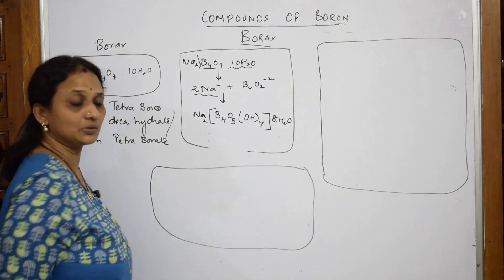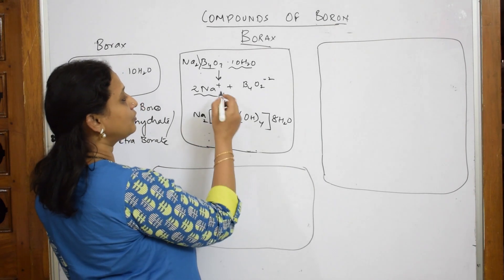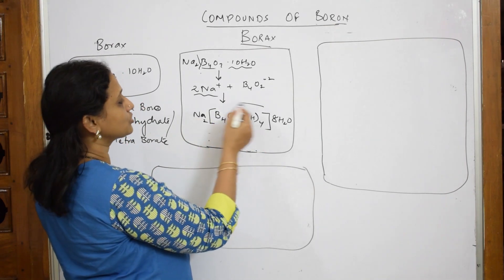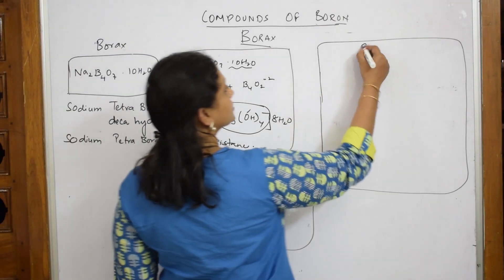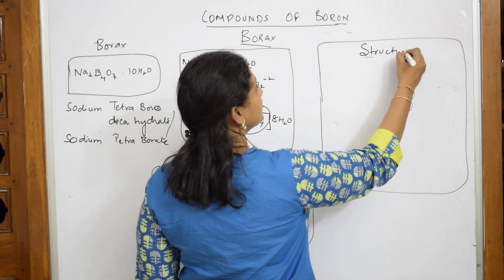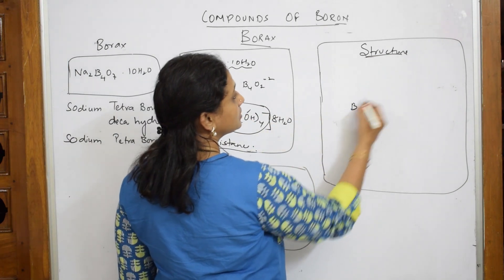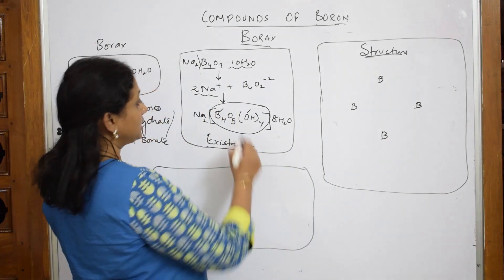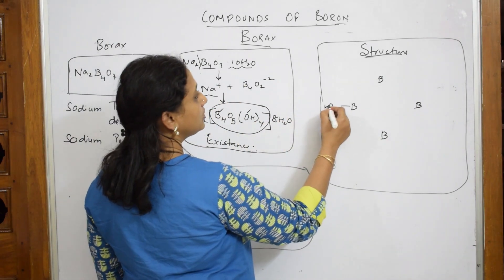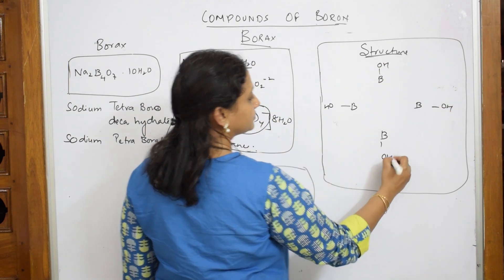And how is this structure looking? When you draw the structure of borax, just observe. Now for drawing the structure of borax, I am just going to pick up this because this is your basic borax structure. Let us draw the structure now. Now we have 4 borax. 1, 2, 3, and 4. The OH of 4. 1, 2, 3, and 4. Done.